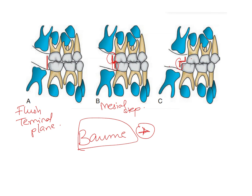When the distal surface of the mandibular molar is more distal compared to the maxillary molar, this is called the distal step. So the nomenclature is based on the distal surface of the mandibular molar — when it is more mesial it's a mesial step, and when it is more distal it's a distal step.